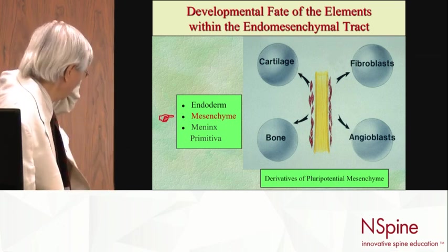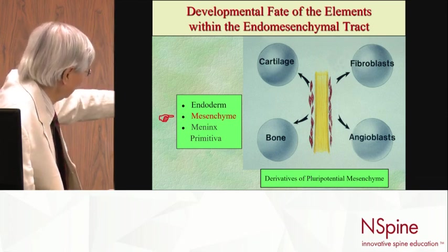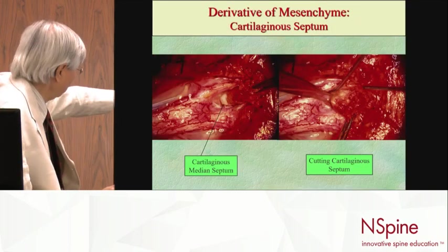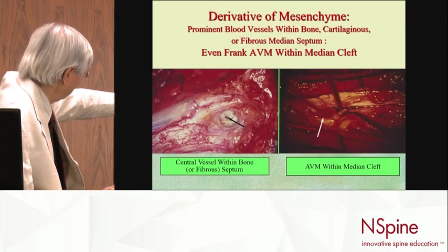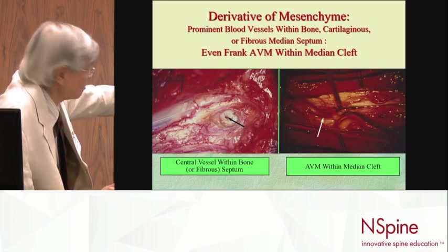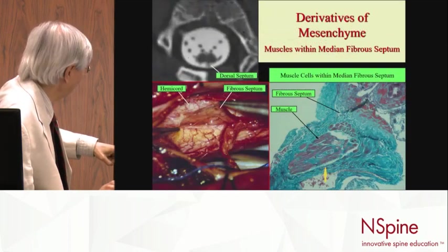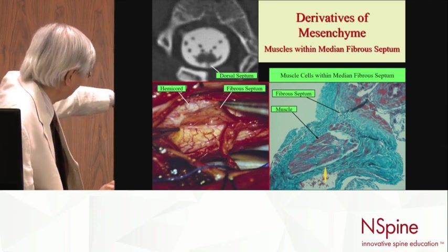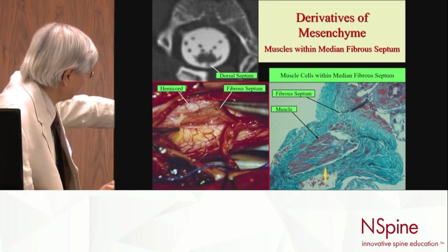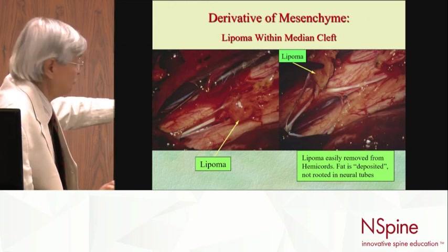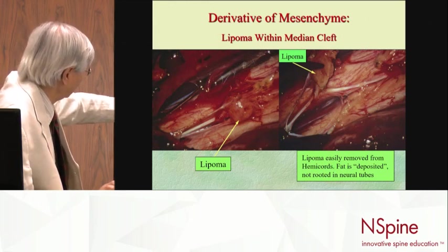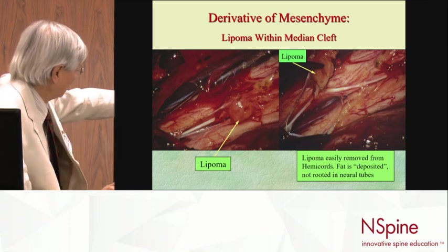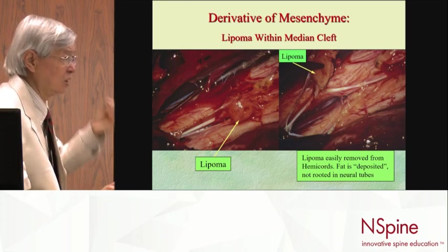What happens to mesenchymal cells? They can develop into cartilage, bone, fibroblasts, angioblasts — all of the above — and we have seen all of these. One case has cartilage, another has large blood vessels within cartilage, and actual AVMs crawling in and out of the midline gap. Another has striated muscle cells and blood vessels sitting in the midline septum on a type 2. There is also fat — a lipoma sitting in the midline cleft that doesn't go into the spinal cord but sits on it and can be lifted off easily.